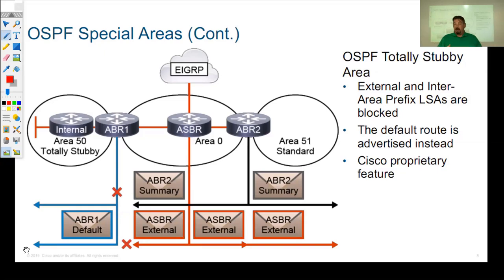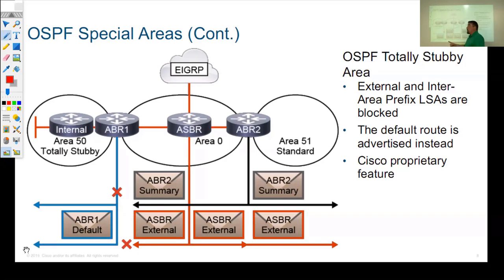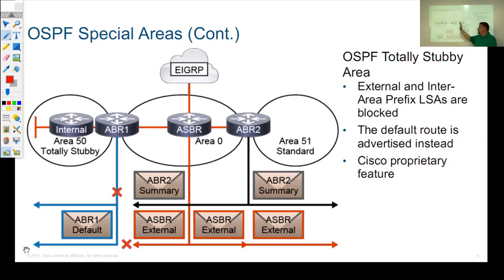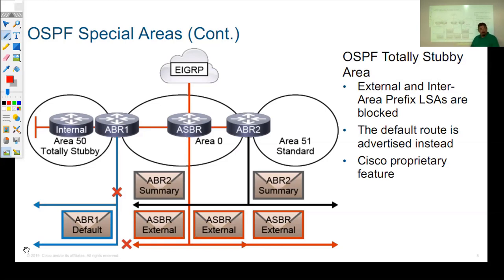Cisco takes the idea of that stub area a couple steps further and created what they call a totally stubby area. A totally stubby area still conforms to the standard OSPF — all routers in area 50 see it as a regular stub area. The big difference is that the only router that has to be a Cisco router is the Area Border Router. It not only blocks those external type 5 LSAs, but also asks: why do you need to know how to reach the ASBR if you don't have any external routes? So it blocks type 4 LSAs as well. And since we're giving you a default route, why send you the routes of all other areas? So it also blocks type 3 LSAs from getting into that area.